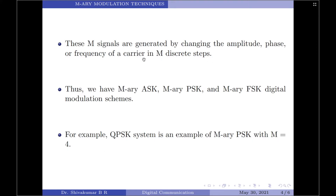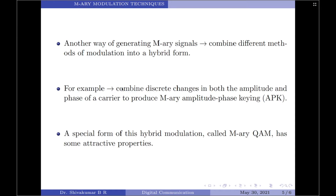In M-ary ASK, only amplitude modulation is involved; in M-ary PSK, only phase modulation; and in M-ary FSK, only frequency modulation. Another way of generating M-ary signals is to combine different modulation methods to create a hybrid form. For example, combining discrete changes in both amplitude and phase of the carrier produces M-ary Amplitude Phase Keying (APK). A special form of M-ary APK is M-ary QAM — Quadrature Amplitude Modulation — which has very interesting properties that will be discussed in a future video.